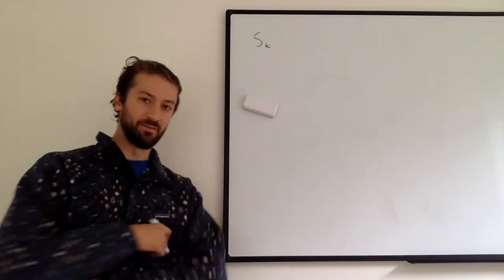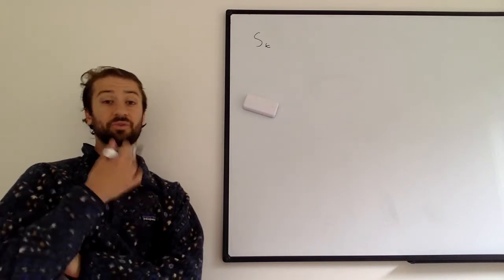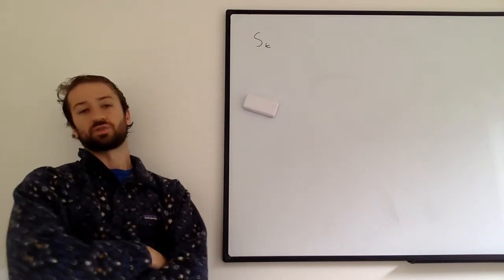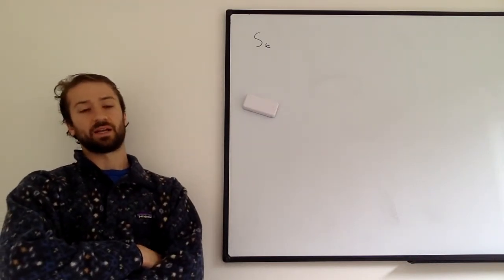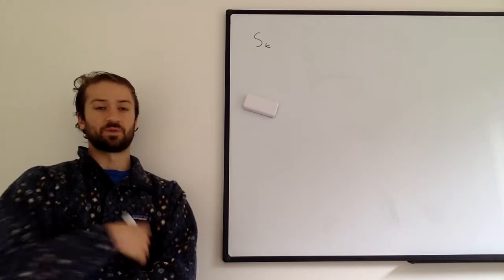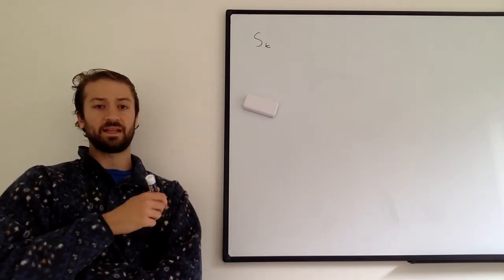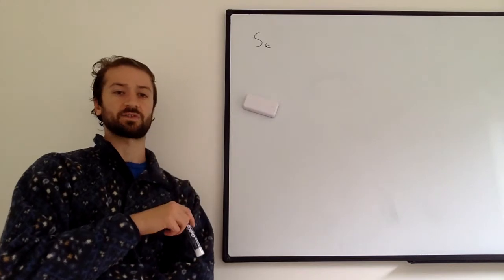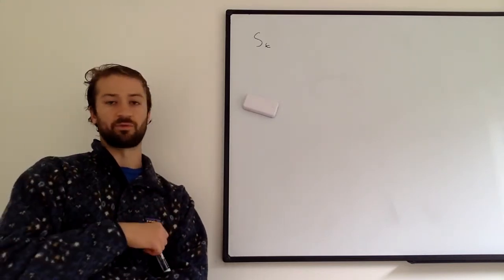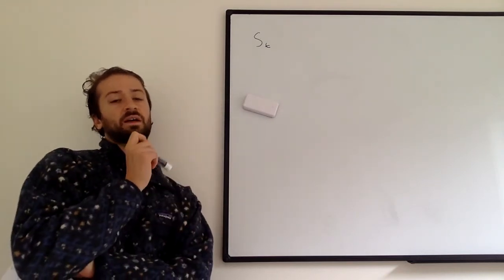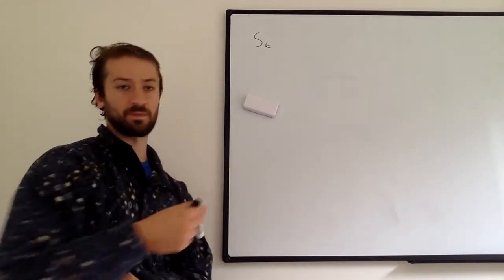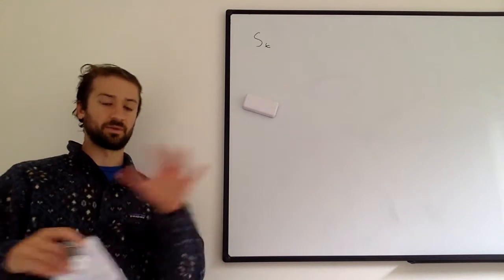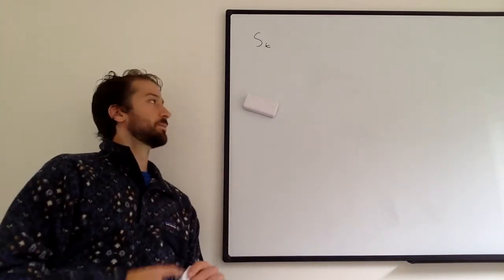In this video, we're going to start on our long march to proving or deriving the Black-Scholes formula, which, as we've discussed, is a very famous financial statistical formula for evaluating the price of a call option, which we've introduced in a previous video. This approach is vastly helped by Stephen Blythe's introduction to quantitative finance — there's a really good proof and derivation there, and I've linked that in the description.